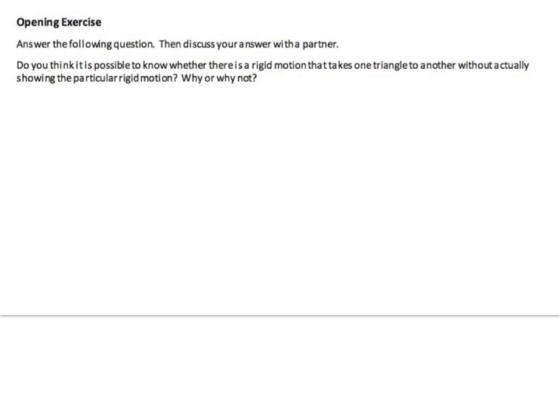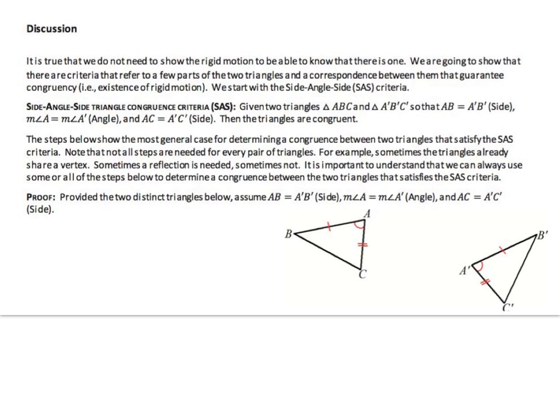Everyone's going to think differently, and we're going to prove a certain way during this lesson. Some of you may think it's not possible because it's necessary to show each transformation as proof. Others may think it is possible just by looking at the triangles carefully. It is true that we do not need to show the rigid motion to know that there is one. We are going to show that there are criteria referring to a few parts of the two triangles and a correspondence between them that guarantee congruency — that guarantee the existence of a rigid motion.